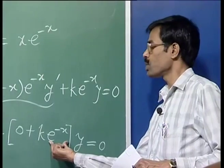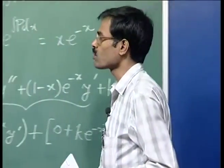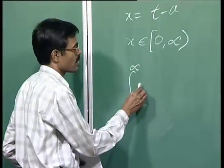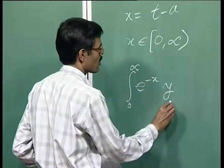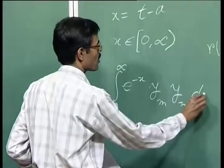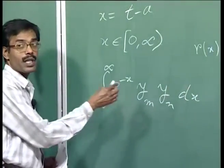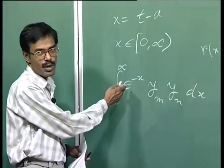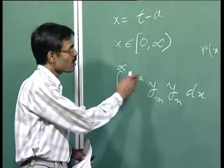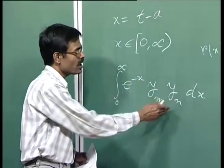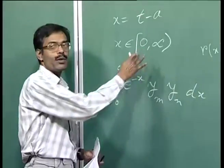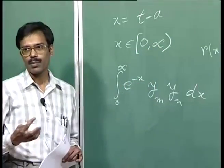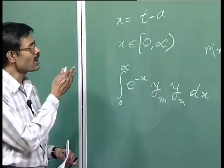The orthogonality statement for Laguerre polynomials is: the integral from 0 to ∞ of L_m(x)·L_n(x)·e^(-x) dx = 0 for m≠n. The weight function e^(-x) is positive definite, which is required. So if you want to represent and manipulate functions over the semi-infinite interval, you use Laguerre polynomials.